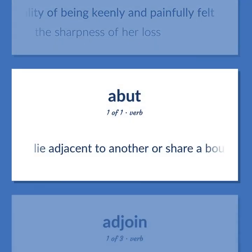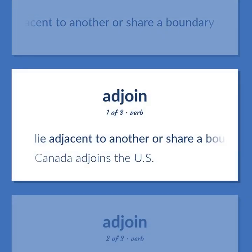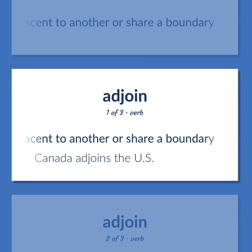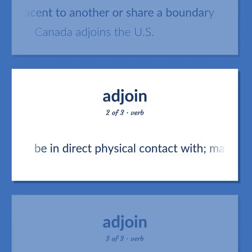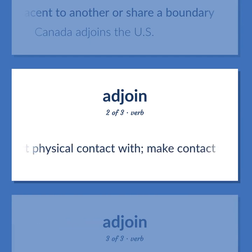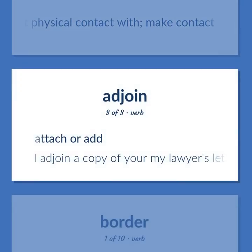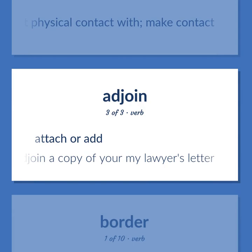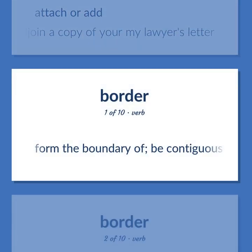ADJOIN: Lie adjacent to another or share a boundary. 'Canada adjoins the U.S.' Be in direct physical contact with; make contact. Attach or add. 'I adjoin a copy of my lawyer's letter.' Form the boundary of; be contiguous to.